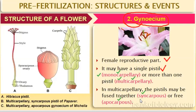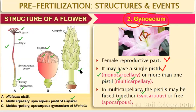Let us see examples of all three types. First, this is the hibiscus pistil — China rose — which is a bisexual flower. It has stigma, style, ovary, and thalamus. The stigma is the top part. In papaver, the carpels are fused together — that is syncarpous. In Michelia, there are many free carpels — that is apocarpous.